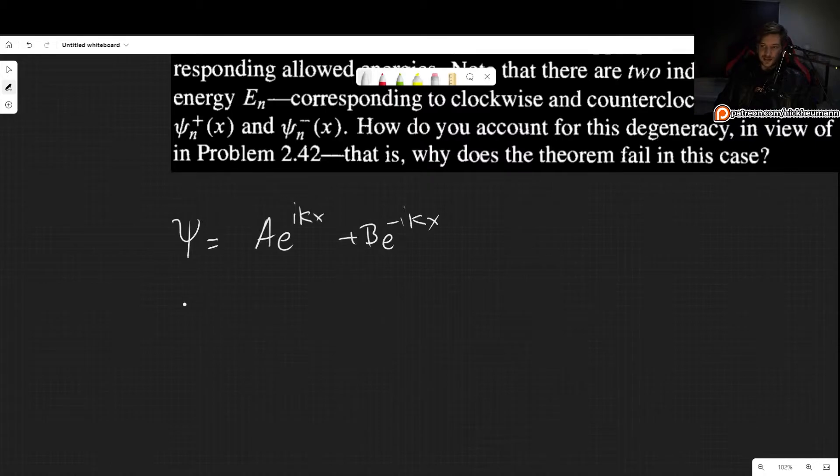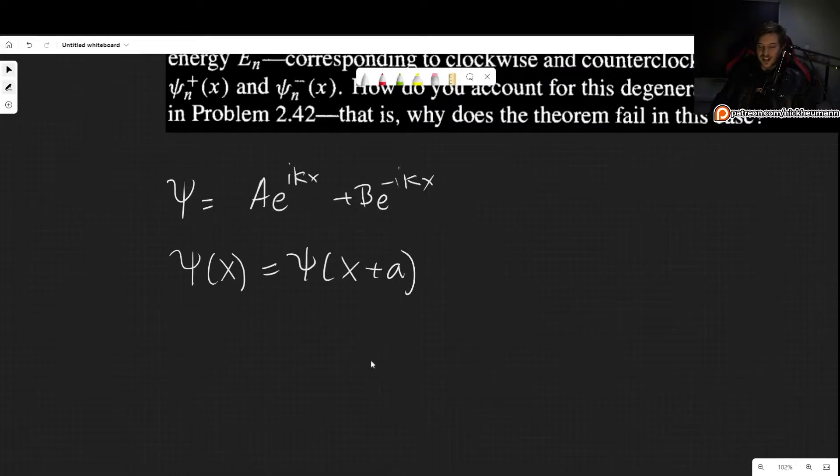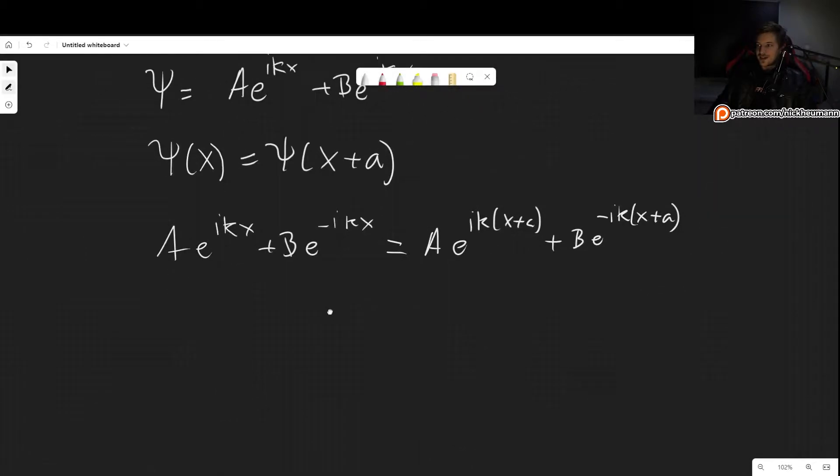Just like many times before, we apply boundary conditions, except that this time our boundary condition is that ψ(x) has to be the same as ψ(x+a). So plugging this in, we get Ae^(ikx) + Be^(-ikx) has to be the same as Ae^(ik(x+a)) + Be^(-ik(x+a)). So this is the boundary condition.